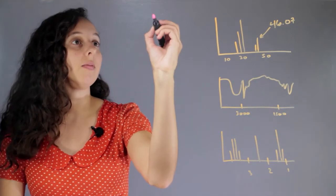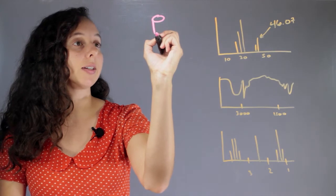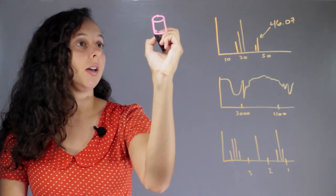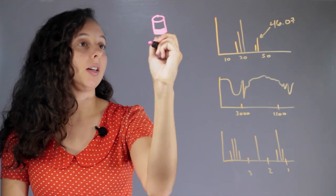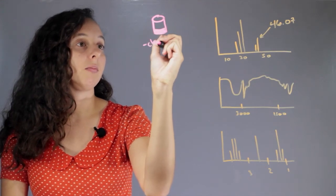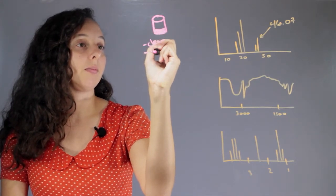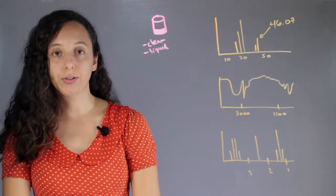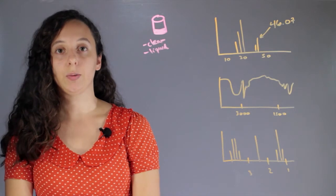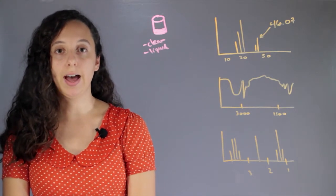Let's say we have a vial of mystery compound X and all we know is that it's a clear liquid. Well, in chemistry thousands of things are clear liquids, so we have to run some tests to figure out what we have.